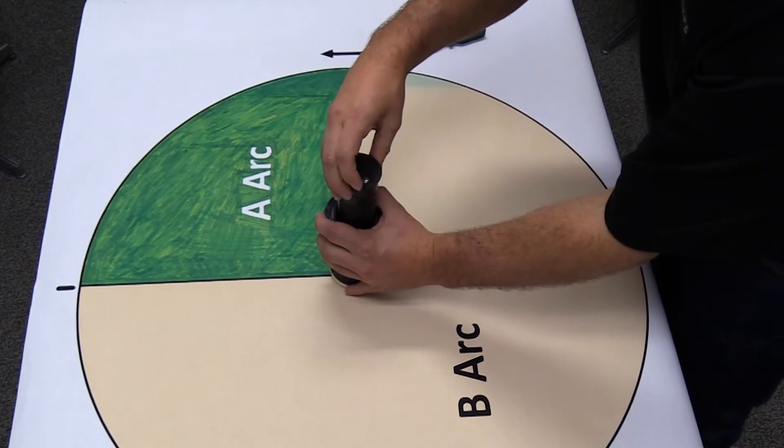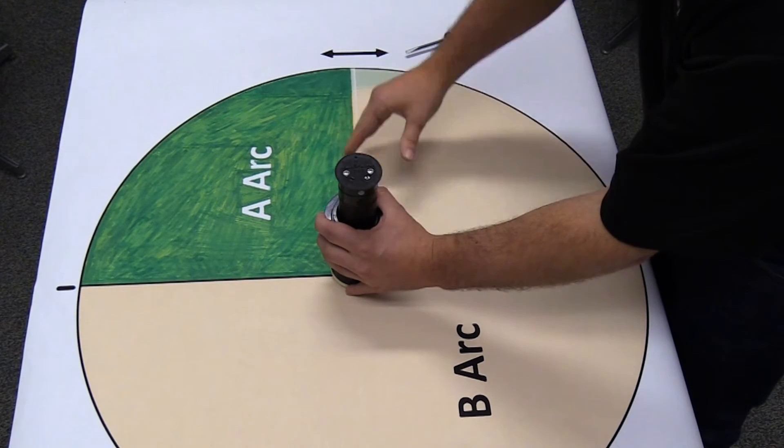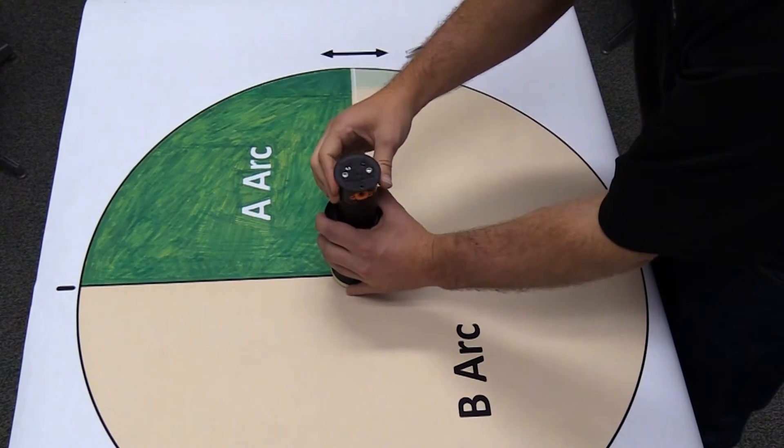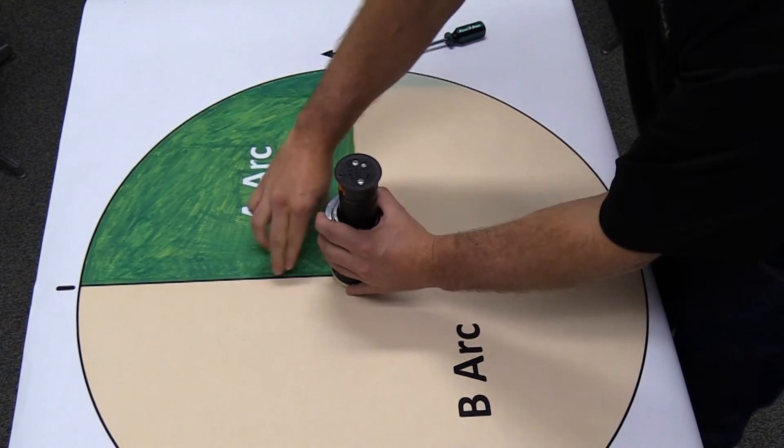Now, when we rotate in this direction, our stop is on this edge of the B arc. If we rotate in the opposite direction, we stop at the other edge of the B arc.